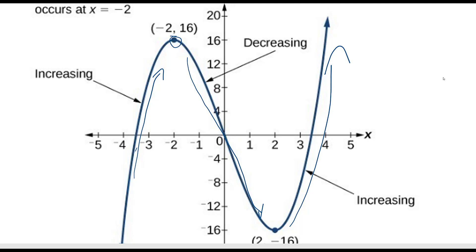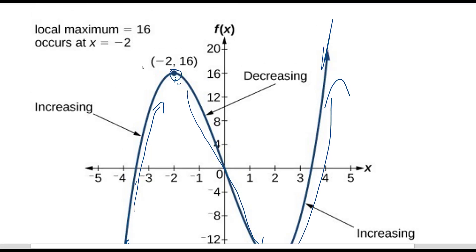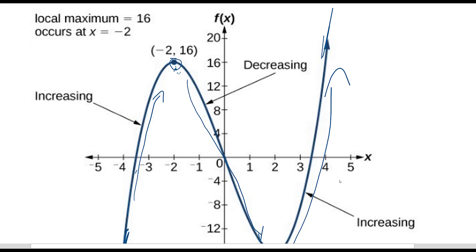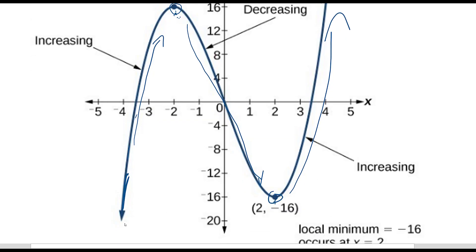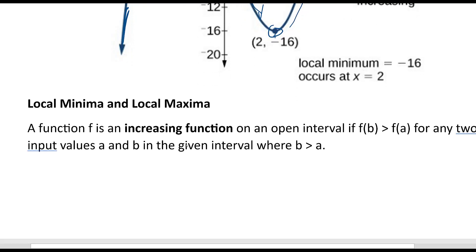There's a high point and a low point on this graph. That high point is not the highest point overall — it's high for the area it's in, but the function goes on forever up and forever down. So we call that high point the local maximum, and the low point is the local minimum. Those are the local minima and maxima — that's the plural.